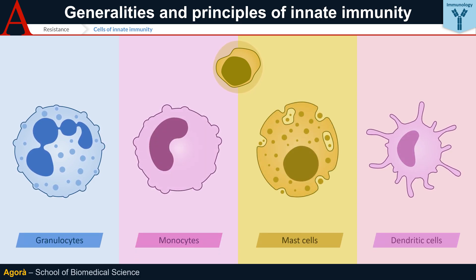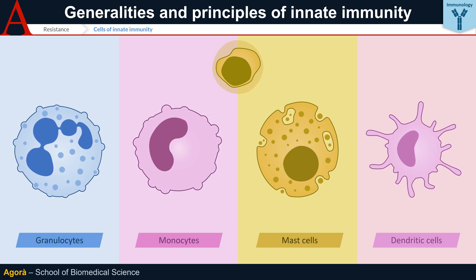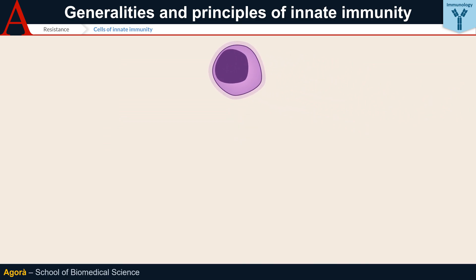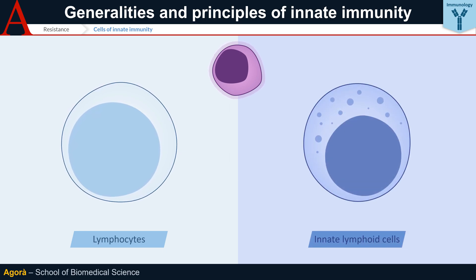Granulocytes — neutrophils, eosinophils, basophils — monocytes, from which some macrophages originate, mast cells and most dendritic cells all derive from the common myeloid progenitor. The common lymphoid progenitor, on the other hand, gives rise to lymphocytes B and T, which we will examine in adaptive immunity, and to innate lymphoid cells, ILCs, which include natural killer NK cells that play a role in innate immunity.